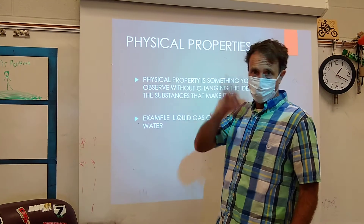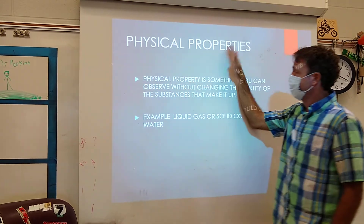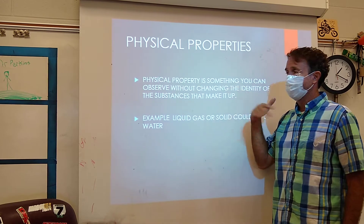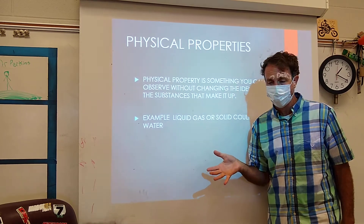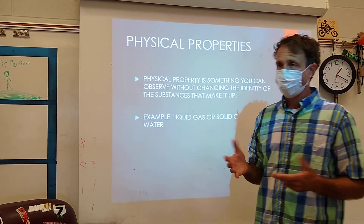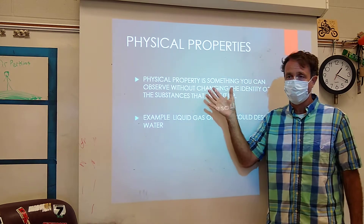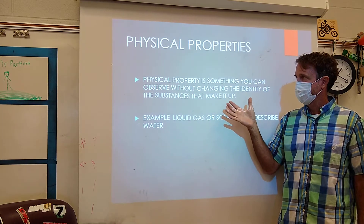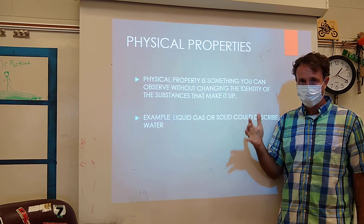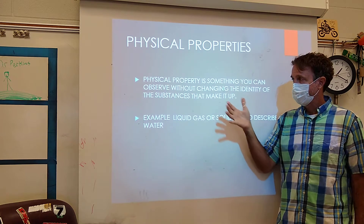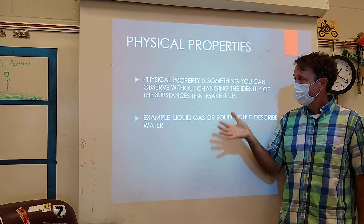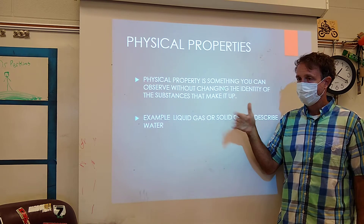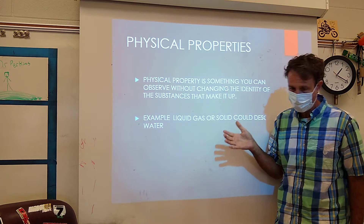We've talked and seen notes online and in class about physical properties before. Physical properties are something you can observe without changing the substance. For example, you can see how heavy something is, what color it is, or its density. You can observe all those things without doing a chemical process, and when you're done, the substance is still the same — if you measure a brick, the brick is still the same length whether you've measured it or not.